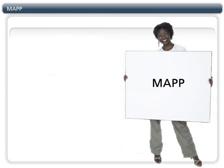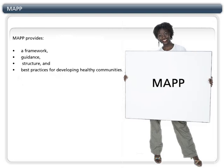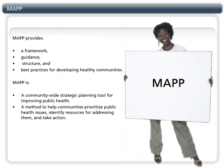MAP provides a framework, guidance, structure, and best practices for developing healthy communities. MAP is a community-wide strategic planning tool for improving public health — a method to help communities prioritize public health issues, identify resources for addressing them, and take action.